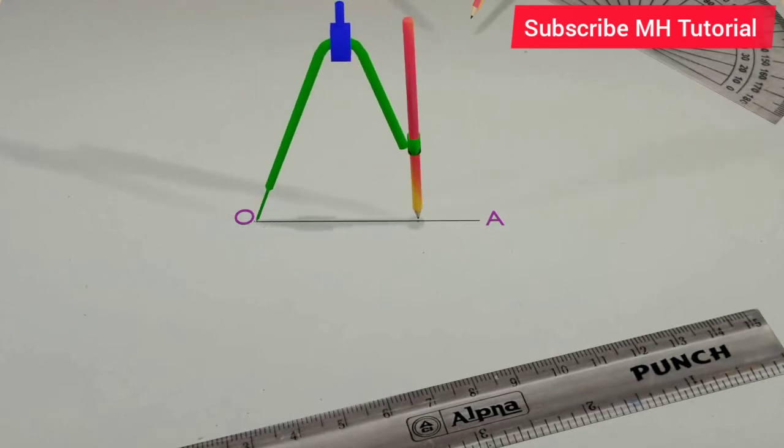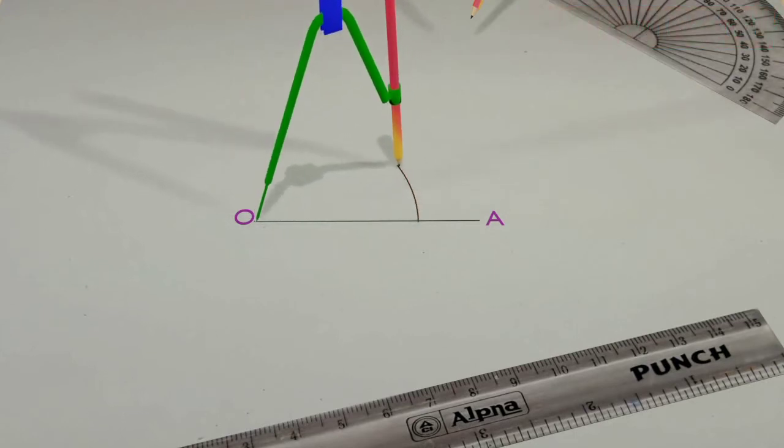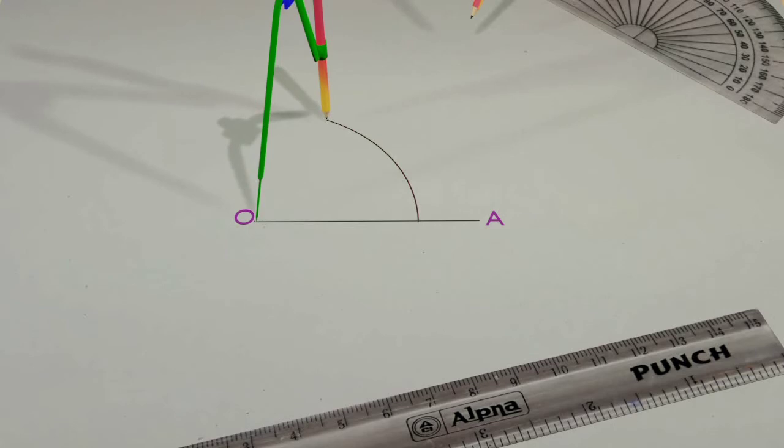A circle arc was drawn with its tip of the spike placed at the point O. The arc of the circle intersects the straight line at the point X.